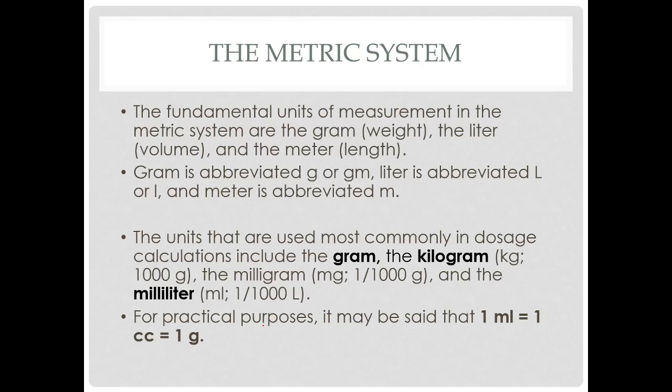Most of the time we're going to be using the metric system. And so we're talking about with weight, gram, with volume, liter, and with length, meter. A gram is abbreviated with a G or GM, liter is abbreviated with an L, and a meter is abbreviated with an M. The units that are most commonly used in dosage calculations are the gram, the kilogram, and the milligram. Occasionally we'll see a microgram, which is one one hundred thousandth of a liter. So very, very small.